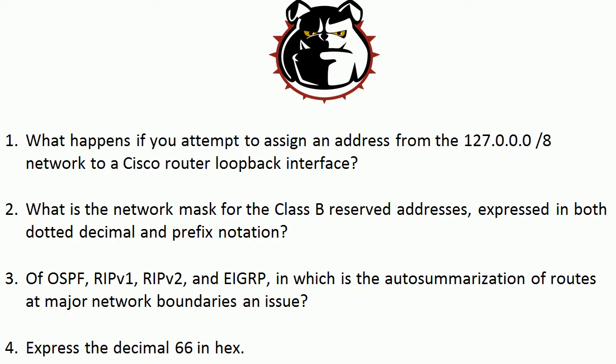Question one: what happens if you attempt to assign an address from the 127.0.0.0/8 network to a Cisco router loopback interface? Question two: what is the network mask for the Class B reserved addresses expressed in both dotted decimal and prefix notation? Question three: of OSPF, RIP version 1, RIP version 2, and EIGRP, in which is the auto-summarization of routes at major network boundaries an issue? And question four: express the decimal 66 in hex. Just that simple.